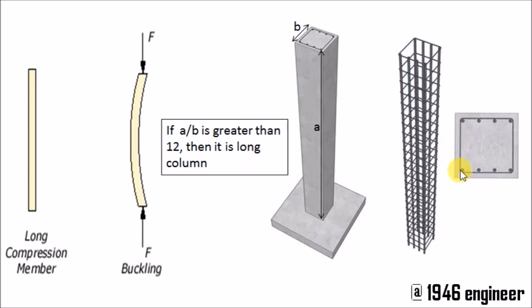This lateral tie holds this main reinforcement in its place. And the second reason is it prevents buckling in the long column.